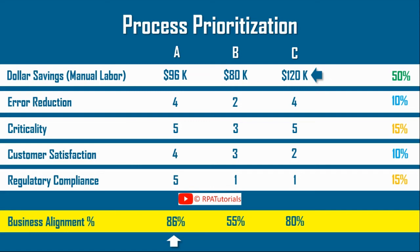Processes which do not align to existing business priorities and are low on dollar savings can be deprioritized and taken up at a later stage, like process B in this case.